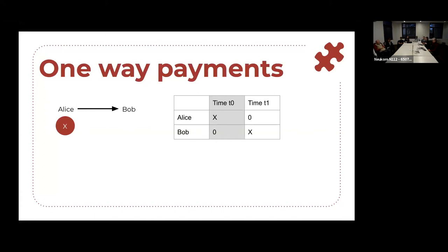If you're familiar with ERC-20 tokens on Ethereum, ERC-20 tokens enable one-way payments — you just want to pay someone. The ERC-20 tokens have a ledger or a registry within the code that defines that token. Let's say that Alice has a digital asset — let's call that X — and she wants to transfer it to Bob. In the registry or ledger, now Bob has X. Very simple.